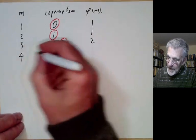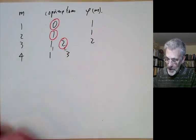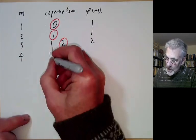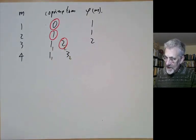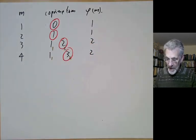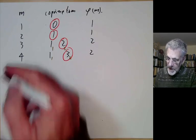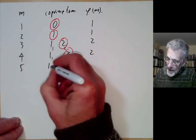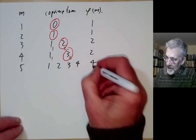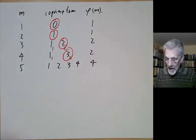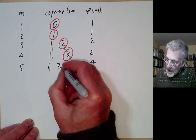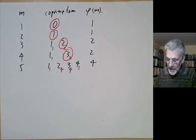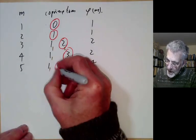For m equals 4, the residue classes are 1 and 3; phi of m is 2. Here 1 is order 1 and 3 is order 2, so there's exactly one primitive root. For m equals 5, phi of m is 4. The element 1 has order 1, 4 has order 2, and 2 and 3 both have order 4. So there are two primitive roots of 5.